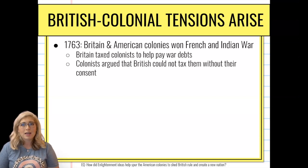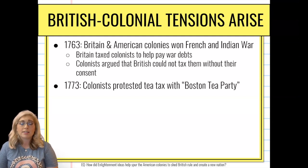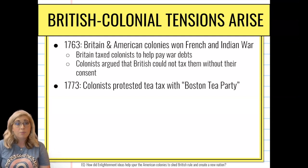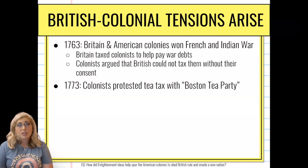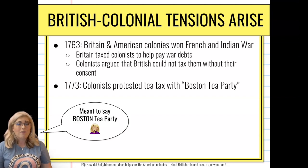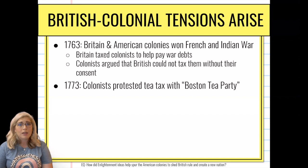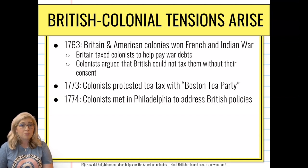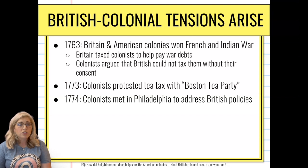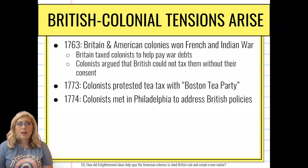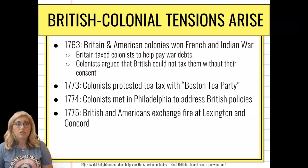We're starting to see those tensions arise. By 1773, after a series of regulations and taxes had been passed, the colonists start to protest. One of the biggest protests becomes known as the Boston Tea Party, where they posed as Native Americans and threw a bunch of tea into the Boston Harbor. By 1774, colonists meet in Philadelphia to address these British policies and decide what they want to do. Our first shots are fired in 1775 in Lexington and Concord, and so we're starting to see the American Revolution kick off.